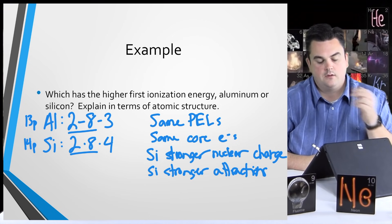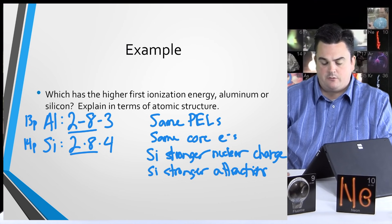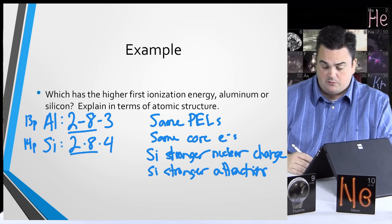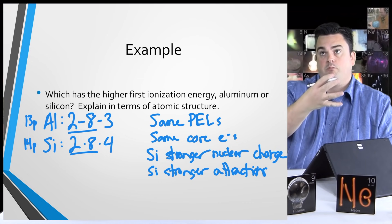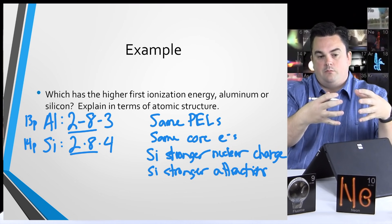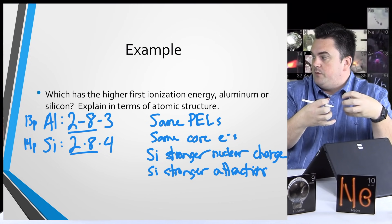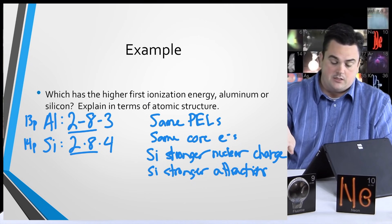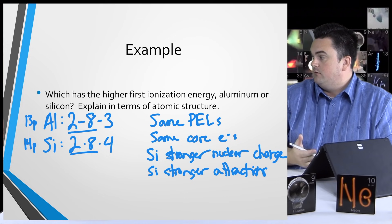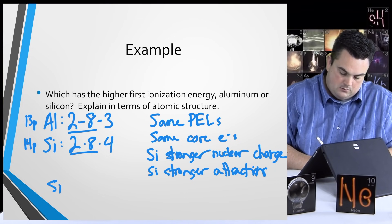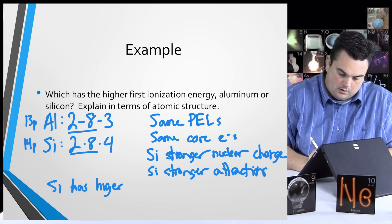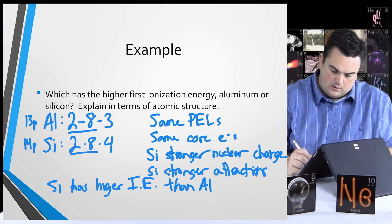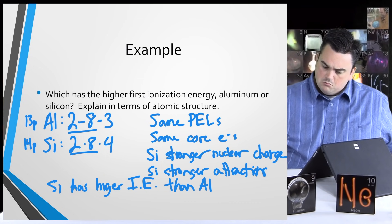We're looking for the higher first ionization energy — the energy required to remove an electron. Silicon has more protons, a stronger nuclear charge, and stronger attractions. Since silicon is holding its electrons more strongly than aluminum, it must be more difficult to remove one — like holding a pencil tighter makes it harder to take away. Therefore, the first ionization energy is higher in silicon because it has a stronger nuclear charge and stronger attractions.